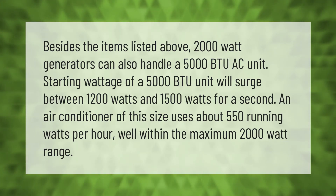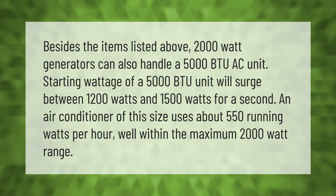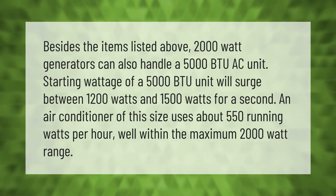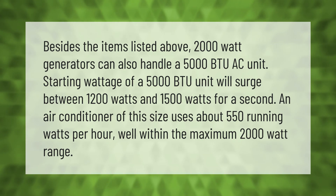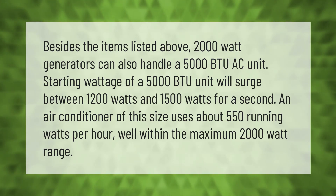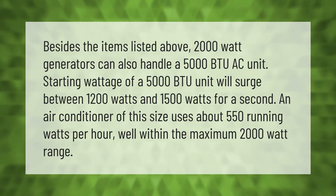2000-watt generators can also handle a 5000 BTU AC unit. The starting wattage of a 5000 BTU unit will surge between 1200 watts and 1500 watts for a second. An air conditioner of this size uses about 550 running watts per hour — well within the maximum 2000-watt range.